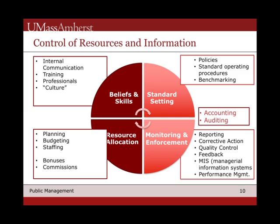Accounting and auditing will fall someplace on this side of the spectrum, though auditing and accounting actually look at all four quadrants in some way. There are also things like setting internal controls through beliefs and skills, or culture — things like internal communication and training professionals. These are ways of setting the right environment for control. And then finally, resource allocation itself can serve as a powerful means of control through planning, budgeting, and staffing.